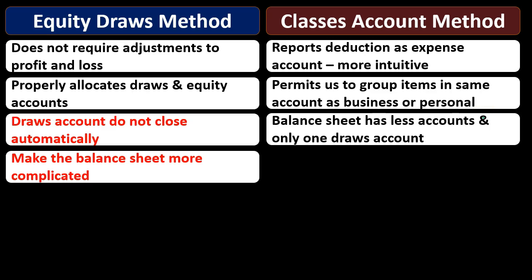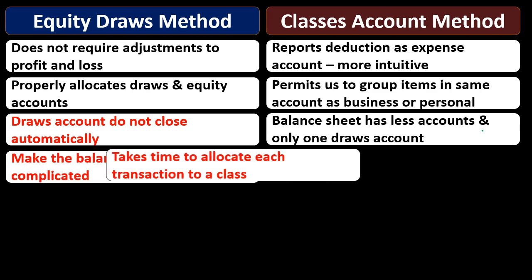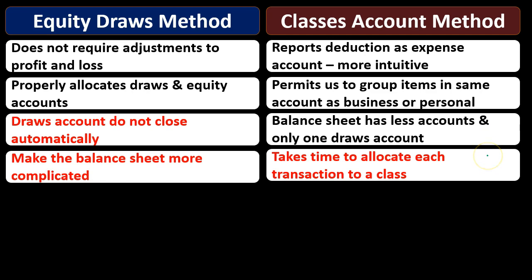The classes method also means the balance sheet has fewer accounts and only one draws account, so the balance sheet looks simpler. The downside is it takes time to allocate each transaction to a class. We have to assign items to a class, which is another step during data entry, and that could take a bit longer.